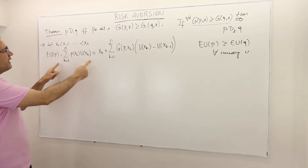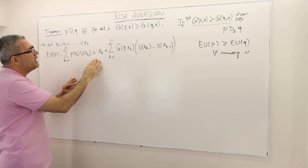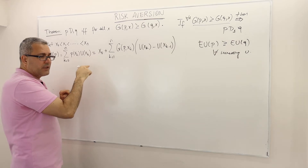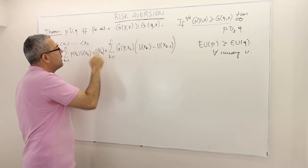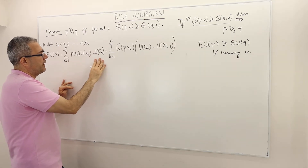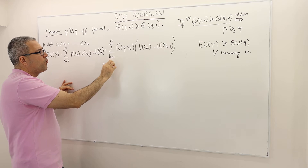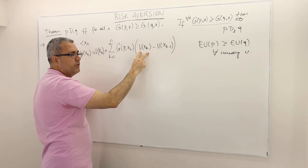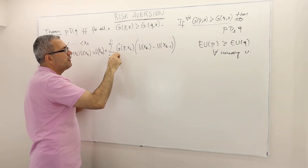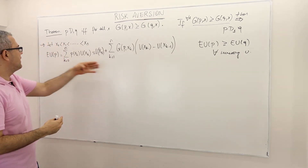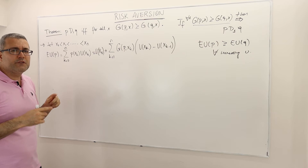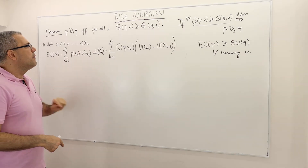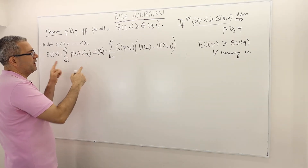Now this expected utility is equal to the following — and it requires some thinking. I claim it equals U(X₀) plus the finite sum from K=1 to N of [U(X_K) − U(X_{K−1})] multiplied by G of P(X_K). How can this be equal to the standard formula? Let's first verify it, then calculate the expected utility of Q and compare them.